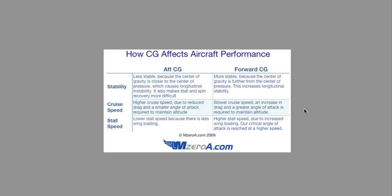You're flying at a higher angle of attack, thus decreasing your cruise speed. And lastly, let's talk about stall speed. With an aft CG, you're going to have a lower stall speed because there is less wing loading. With a forward CG, you'll have a higher stall speed due to the increased wing loading. Your critical angle of attack is reached at a higher speed — you're going to stall at a higher speed with a more forward CG.